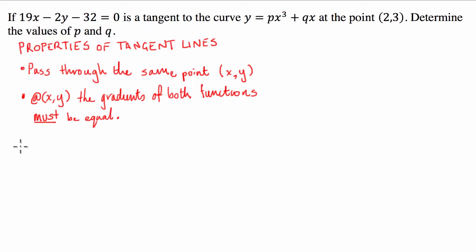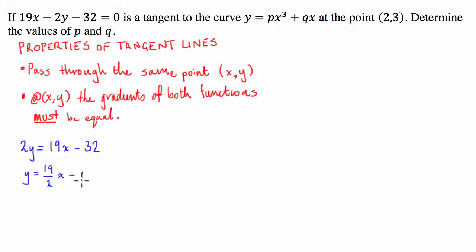We take the 2y across to the other side: 2y equals 19x minus 32. Dividing both sides by 2 gives y equals 19/2 x minus 16. From here we can ascertain that the gradient, or m, is equal to 19/2.